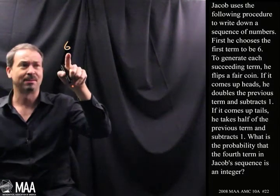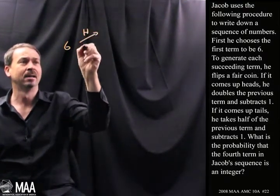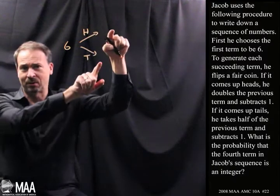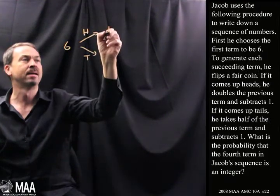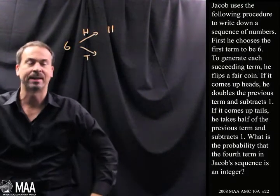So what am I going to do? Well, at least, you know, we know the first number is 6. The second number, if he gets a head or he gets a tail, it's going to be determined by what's going on here. So if he gets a head, what is it? Double it and subtract 1. Double 6 is 12, subtract 1, means the next number will be 11 in the sequence if he gets a head.